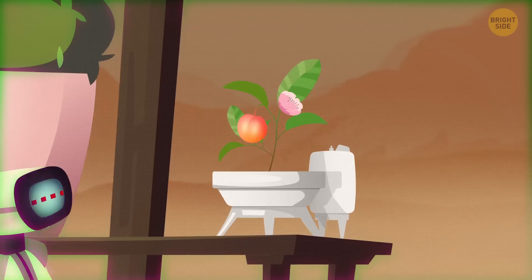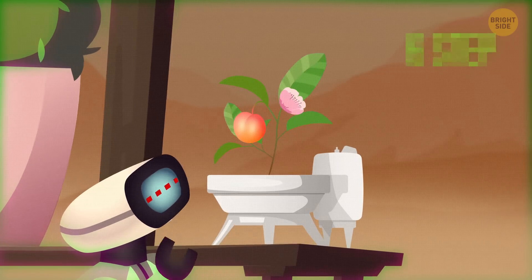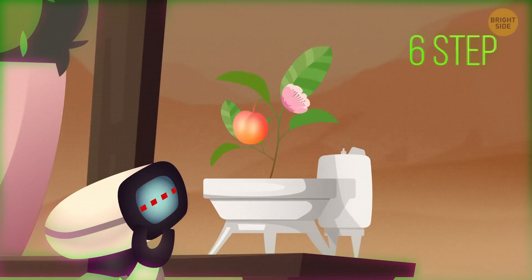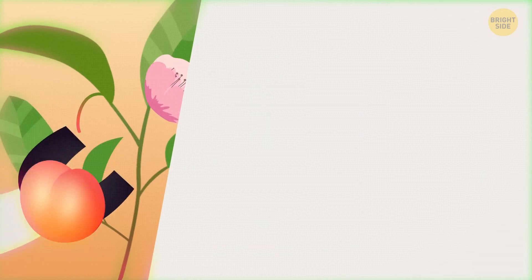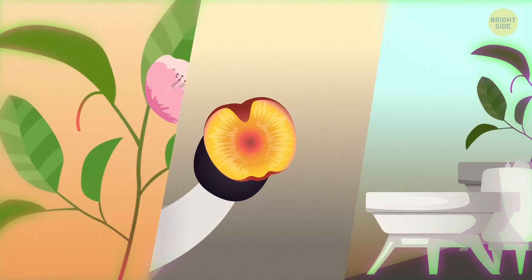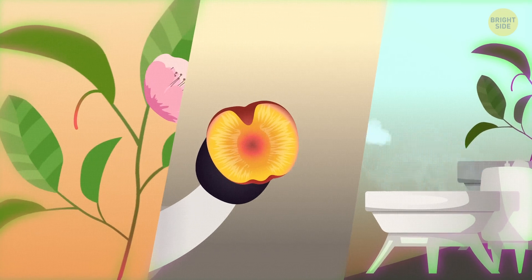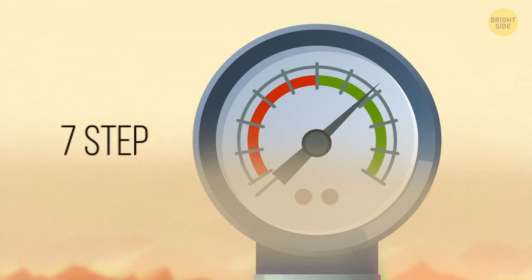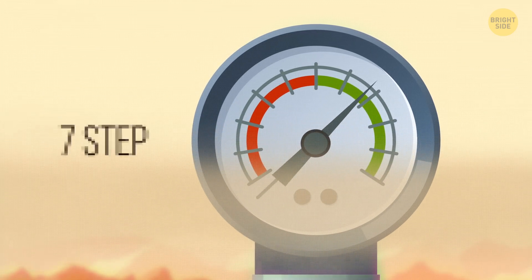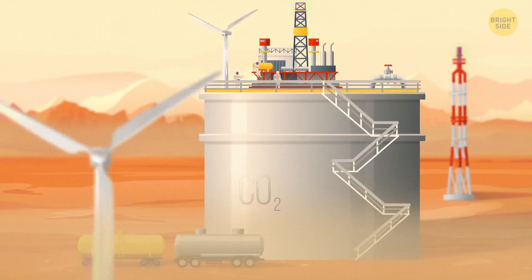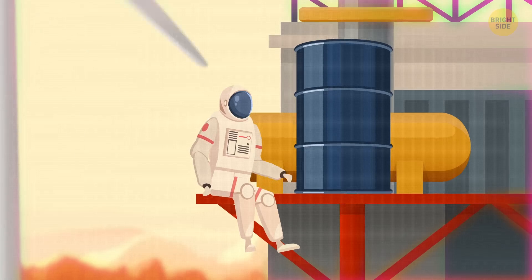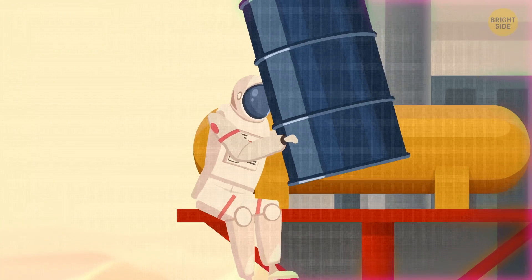Sooner or later, the food we bring with us will run out. So, we'll have to grow food directly on Mars. This requires fertilizers and greenhouses. Now that everything else is taken care of, the main task is to produce fuel. We need it for vehicles on Mars and for rockets to be able to return home. Fuel can be extracted from the carbon dioxide in the atmosphere and water.